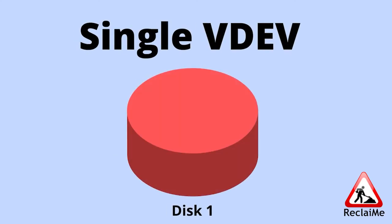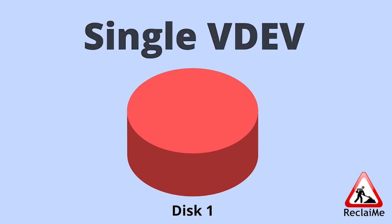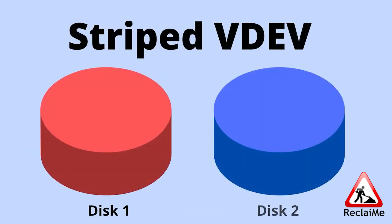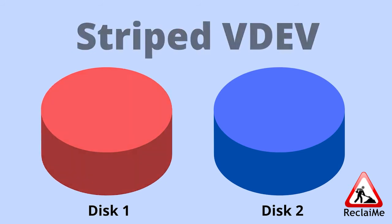There are different types of ZFS pools. Single disk, in which redundancy isn't used. Stripe pool — it's just like a RAID0, in which data blocks are distributed over the member disks. Also, there is no redundancy.